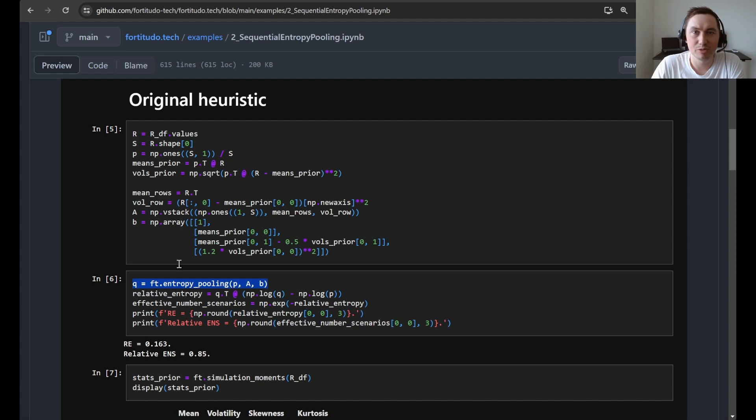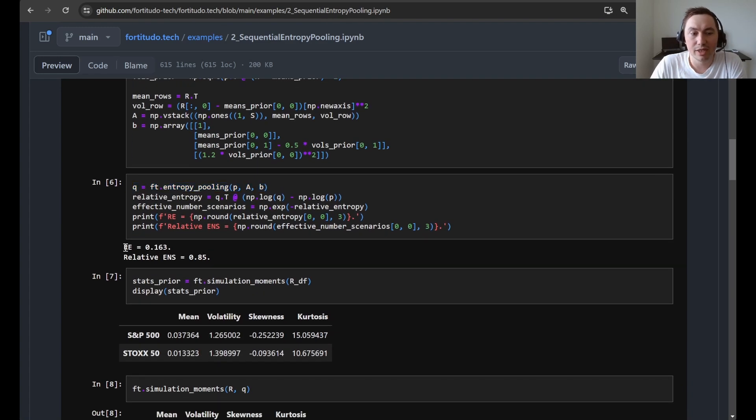So here we compute a posterior probability distribution for the original heuristic and its relative entropy and relative effective number of scenarios. So here you can see that we have this number for the relative entropy and this number for the relative effective number of scenarios.